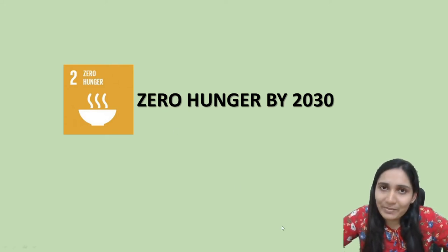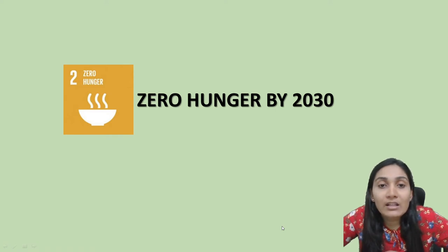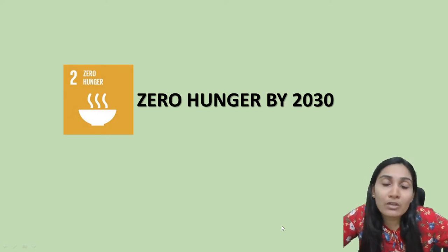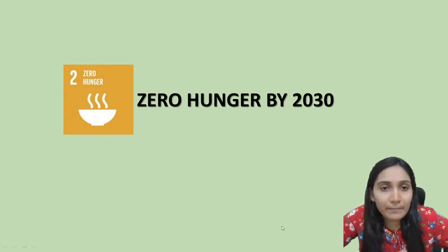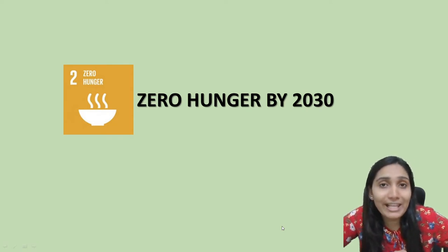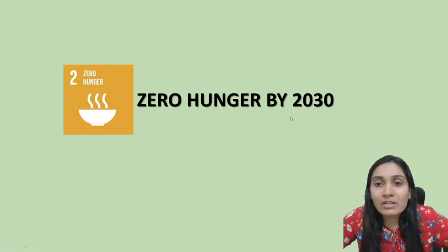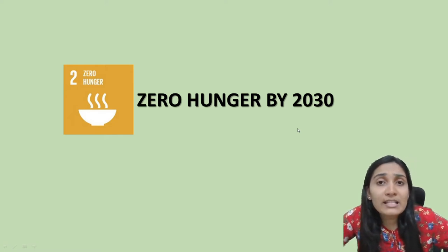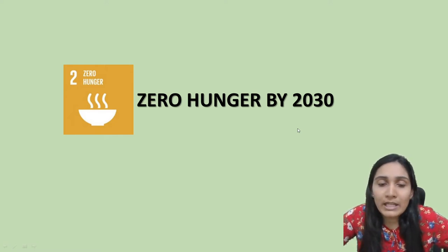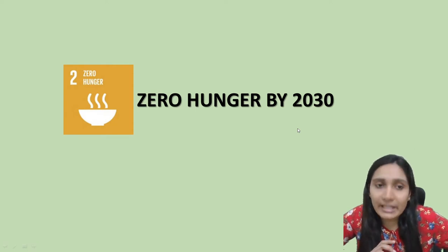Hello friends and welcome to DigiMento. Today we will be discussing about the target of achieving zero hunger by 2030. This is one among the Sustainable Development Goals. Under the SDGs we have 17 goals, out of which the second goal is zero hunger — to eliminate hunger by the year 2030, which is the deadline for achieving all 17 SDGs.